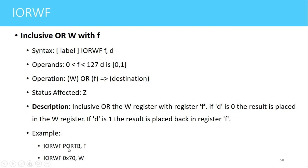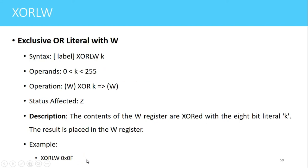Since the destination bit is F, the result will be stored in the PORTB register. Another example is IORWF 0x70, W — the value stored at address 0x70 will be ORed with the value in the working register, and the result will be stored in the working register since the destination bit is W. Note that W and 0 are equivalent for the destination bit.